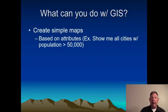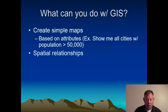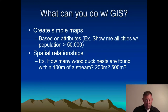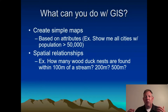We can make simple maps — for example, show all cities with a population greater than fifty thousand. We can also look at spatial relationships. So if we've got a layer of wood duck nests and a layer of rivers, we could ask: how many nests are within 100 or 500 meters of a stream? What's the average distance to a stream, or the average distance to the nearest wetland for a wood duck nest? Those are spatial relationships.